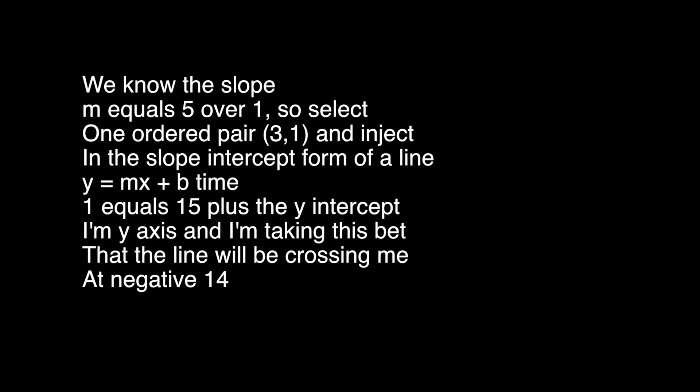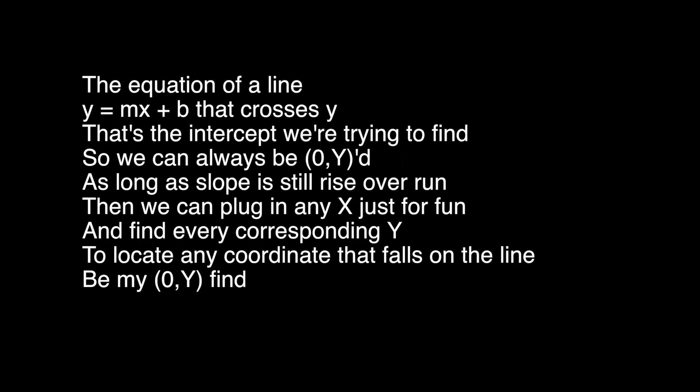We know the slope: m equals five over one, so select one ordered pair, three comma one, and inject it in the slope-intercept form of a line: y equals mx plus b. One equals fifteen plus the y-intercept. I'm the y-axis and I'm taking this bet — that the line will be crossing me at negative fourteen.